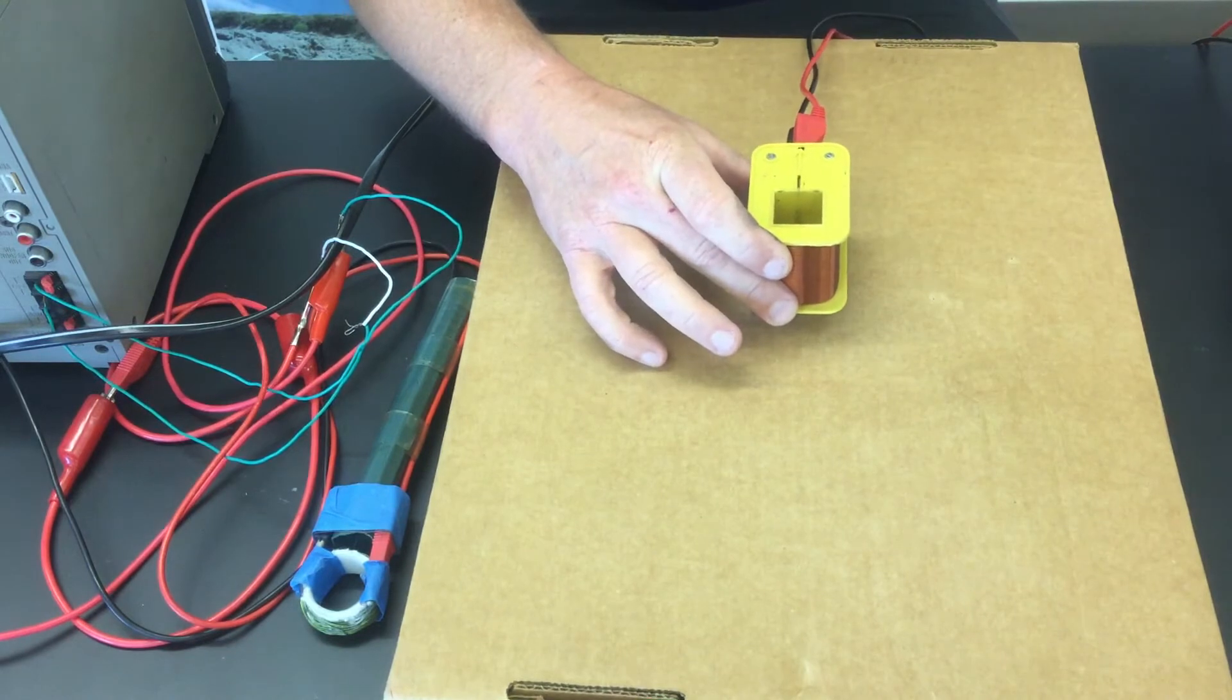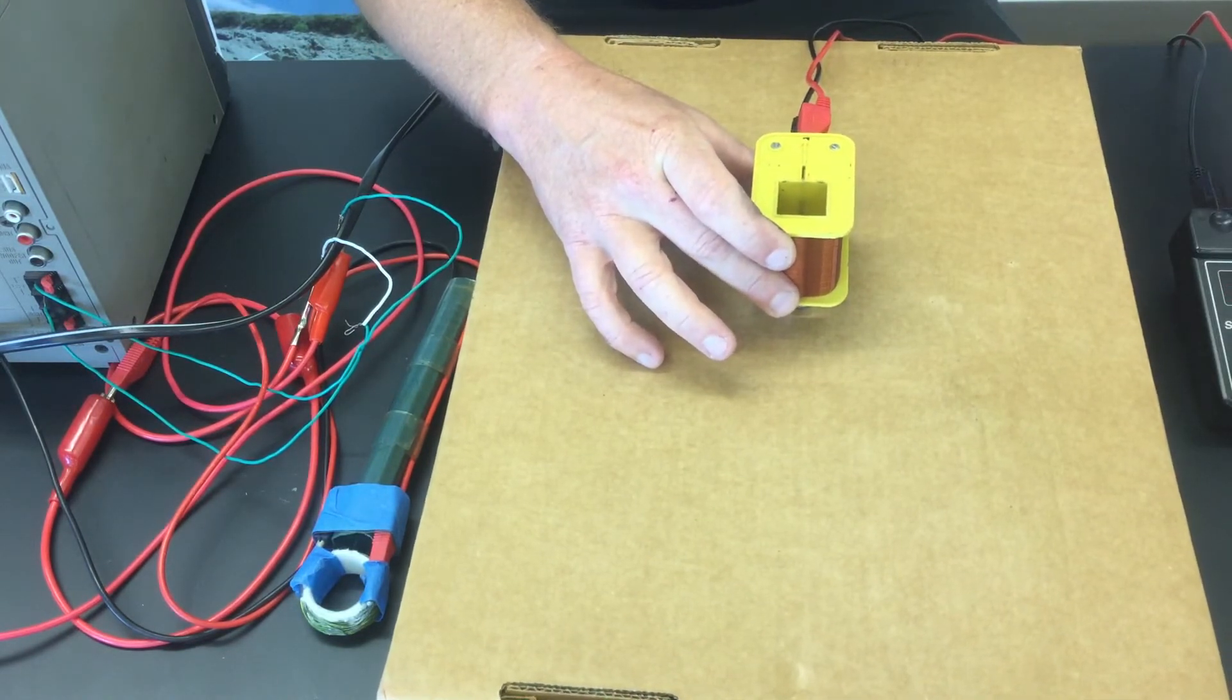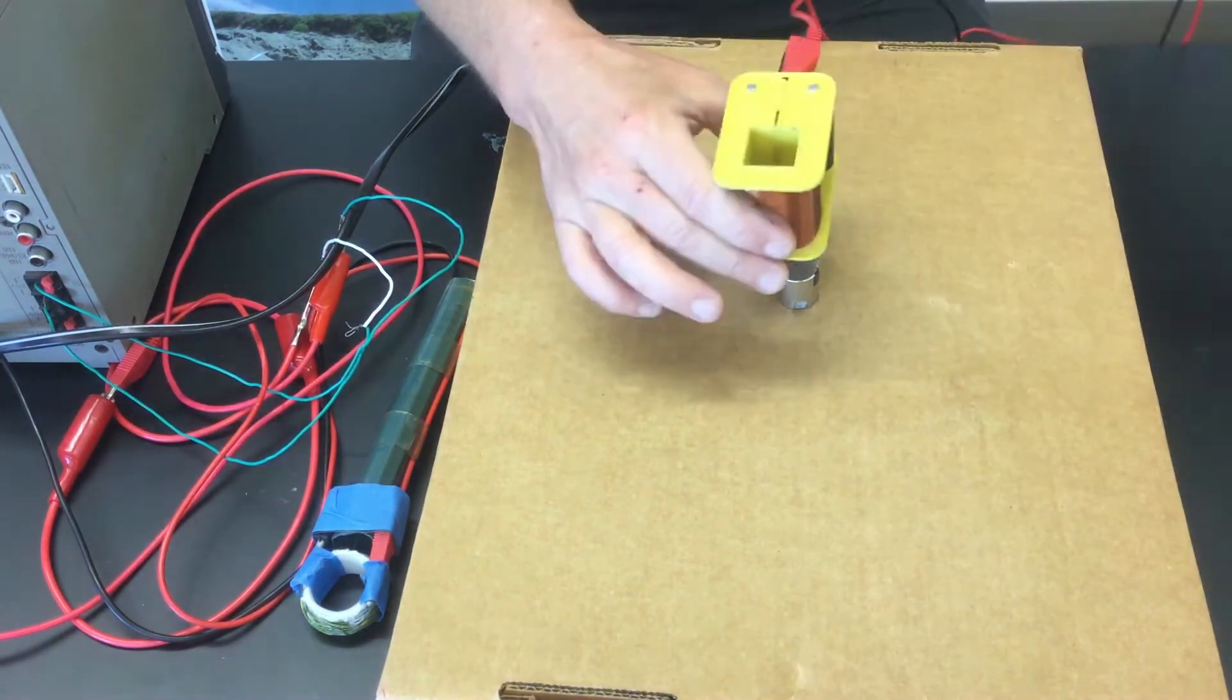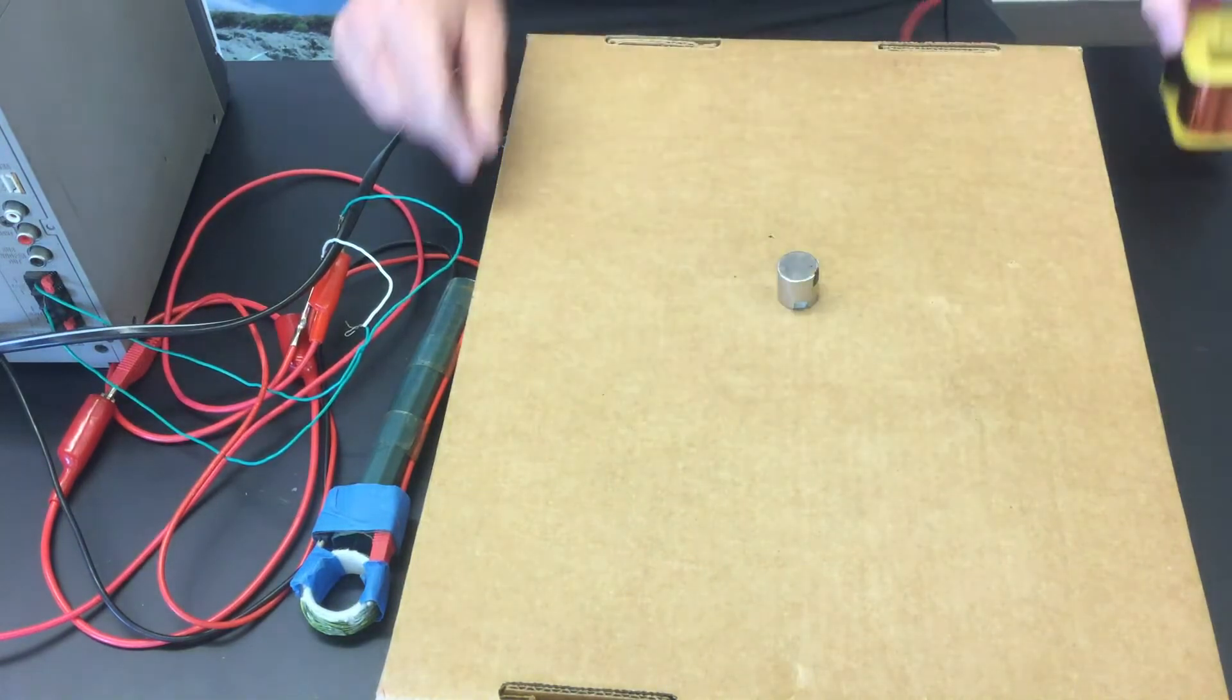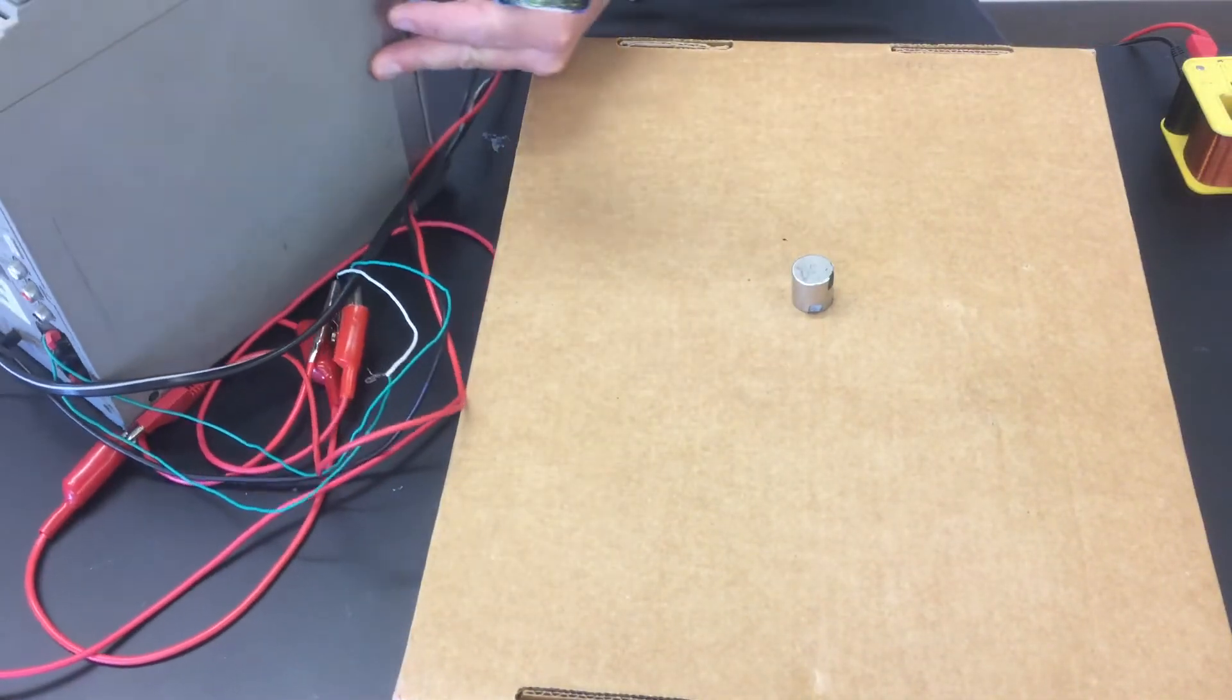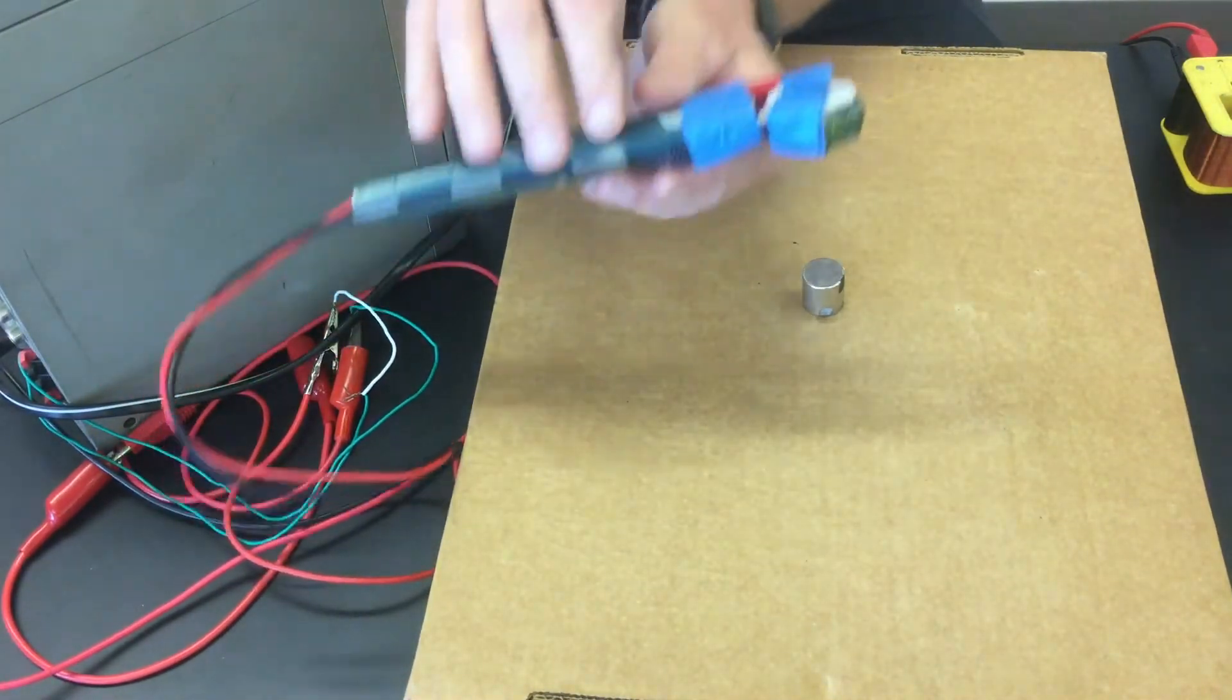Well, if you want to hear real music, what you would do is instead of using a machine like this to send signal to the coil, you can use a CD player. So here's an old CD player I've got, and what I've done is I've taken the connections that would usually go to a speaker and I've put them into this coil.